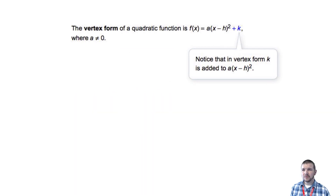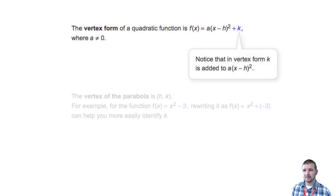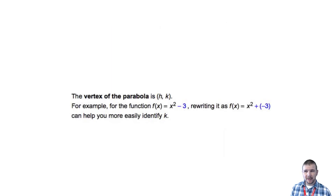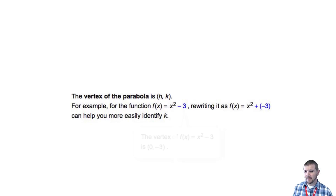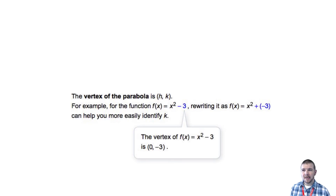Also note k. In vertex form, k is added to a times the quantity x minus h squared. The vertex of the parabola is the point represented by the ordered pair h comma k. For example, for the function f of x equals x squared minus 3, rewriting it as f of x equals x squared plus negative 3 can help you more easily identify k. So in this case, the vertex of f of x equals x squared minus 3 is the point 0 comma negative 3.